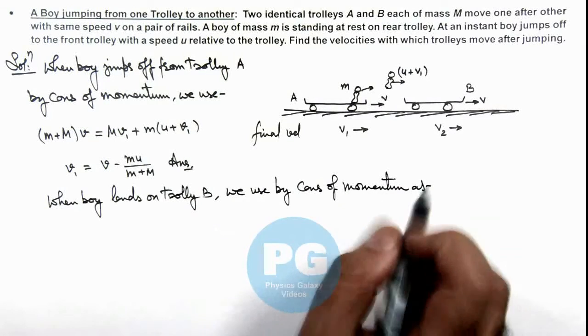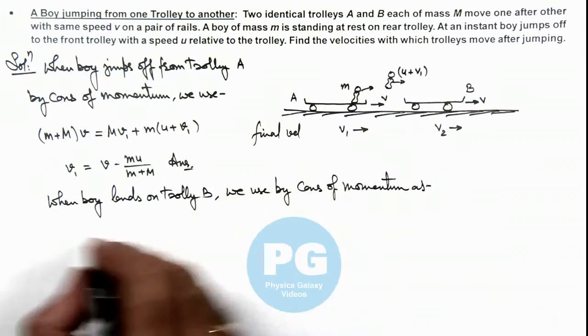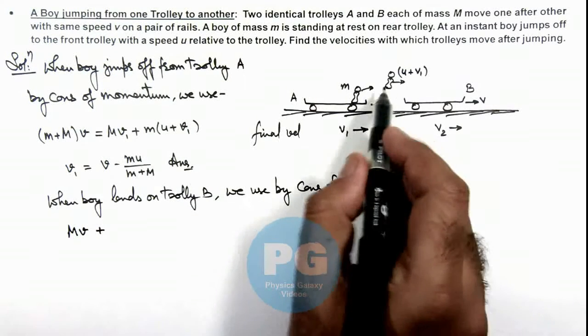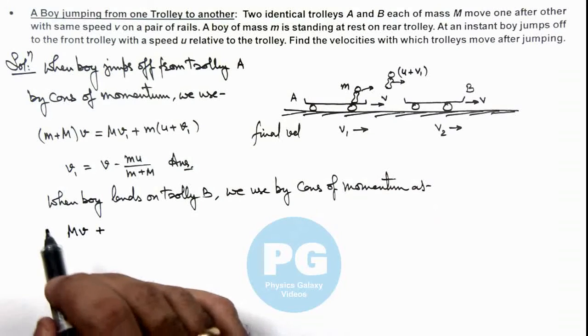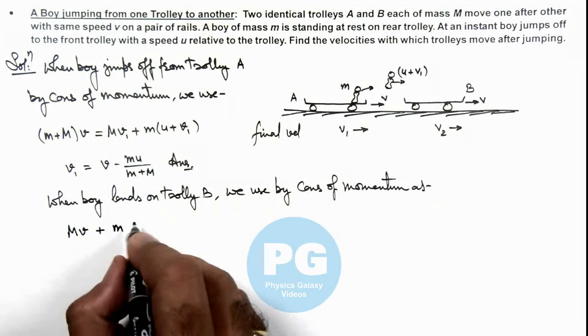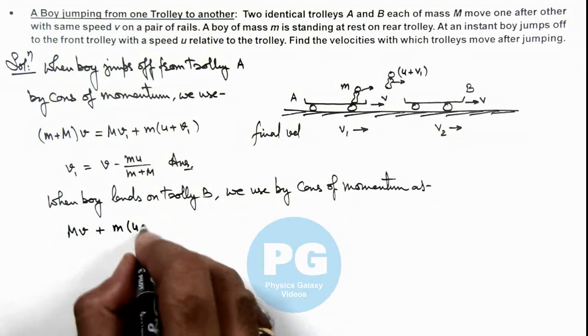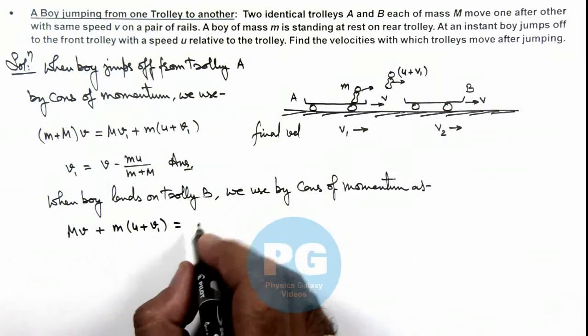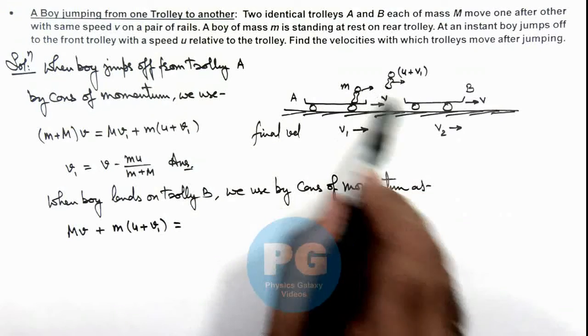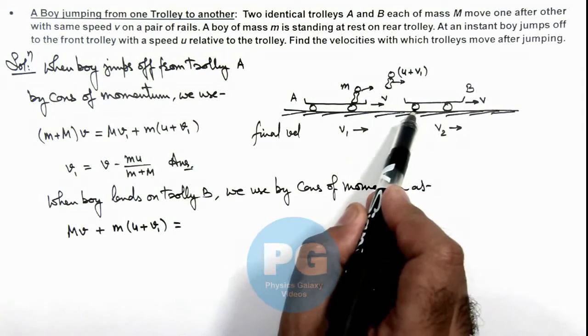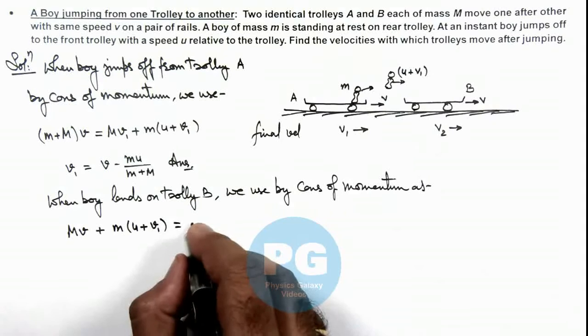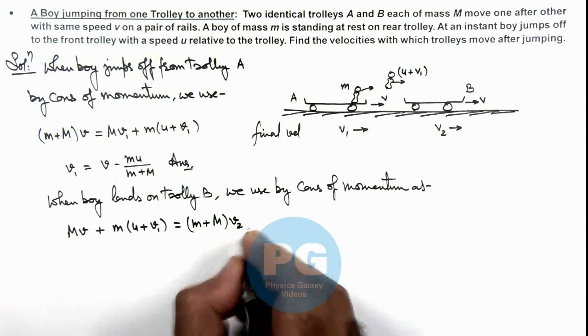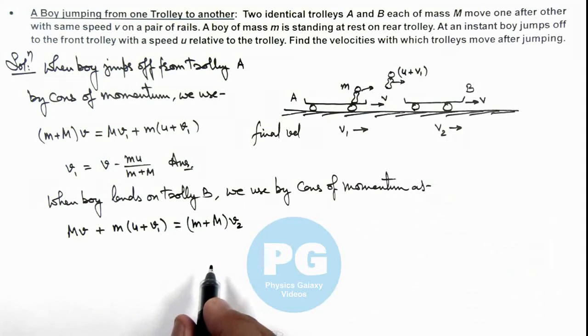The initial momentum of trolley was Mv, plus the boy who lands on the trolley has momentum m(u + v₁). This must equal the final momentum. Now boy plus trolley will be moving as a single system, so this can be written as (m + M)v₂, where v₂ is the final velocity of trolley B.